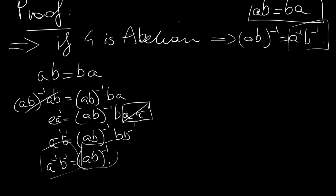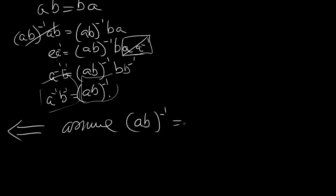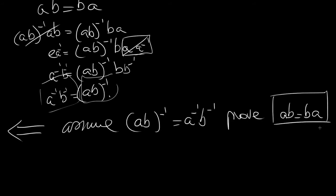Now let's do the other direction. Assume (AB)⁻¹ equals A⁻¹B⁻¹, and we will prove that G is abelian, meaning AB equals BA. When you want to prove a group is abelian, you want AB equals BA as your end result.